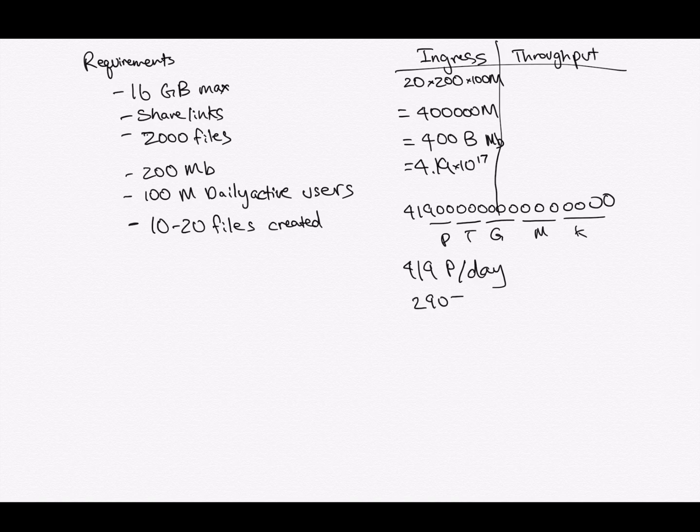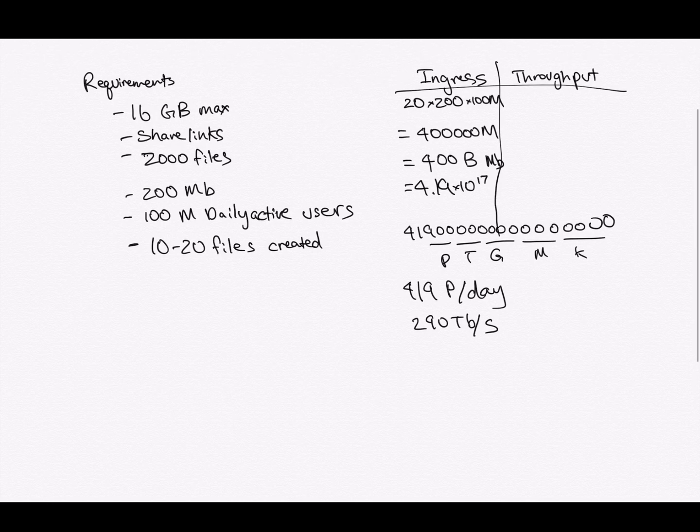So if we divide that by 60, divide that by 24, and divide by 60 again for seconds, that's going to be around 290 gigabytes per second. This is going to be a very, very large scale system that can handle a very large ingress.